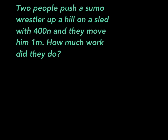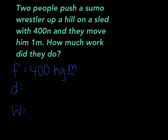You want to start off by putting your force, your distance, and your work. So your force would be 400 newtons — you put 400 kg and then meters over seconds squared. And your distance would be one meter. And then for your work, you put a question mark because it says how much work did they do, so we don't know.